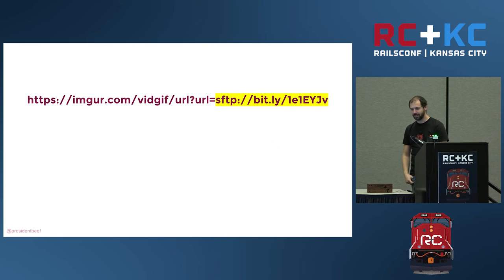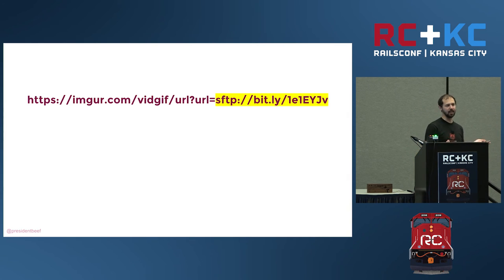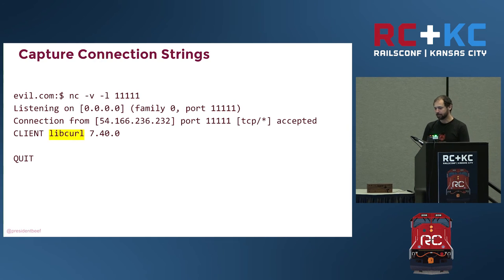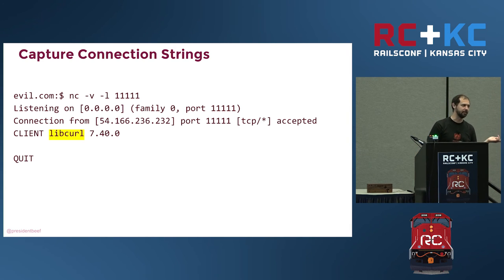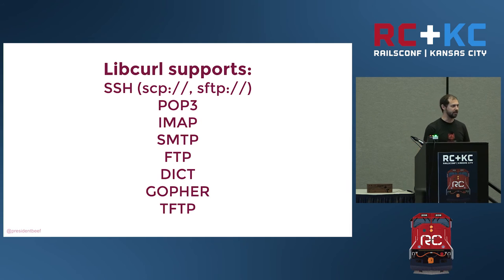The researcher thought: what if I change HTTP to SFTP, and set up a server where I can see the requests that come in? Using netcat to listen on a port, one of the things that came in was a libcurl version string — pretty useful information. He started trying all these different protocols, and essentially Imgur would just execute whatever protocol you gave it.